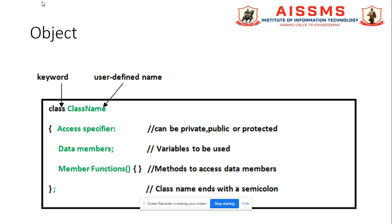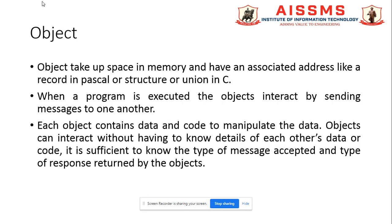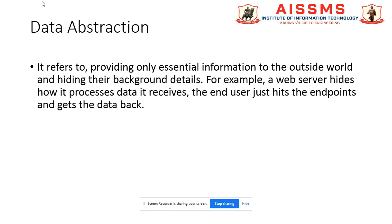And at the end the parenthesis with semicolon shows us that class name ends with a semicolon. So any class would be terminated with a semicolon. So this is the general introduction of class and object.